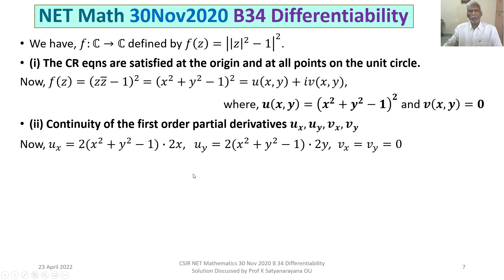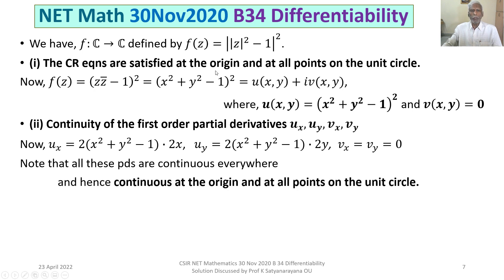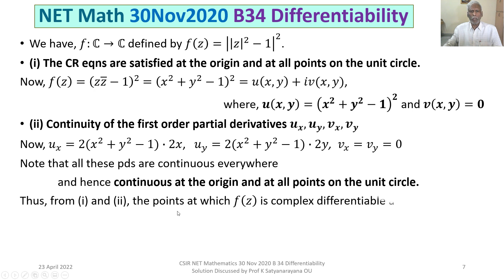Note that ux, uy, vx, and vy are all polynomials in x and y, and hence they are continuous everywhere. Therefore they are continuous at the above points — namely at the origin and at all points on the unit circle. Combining the Cauchy-Riemann equations (from case 1) and the continuity of the first-order partial derivatives (case 2), we conclude that f(z) is complex differentiable at the origin and at all points on the unit circle.